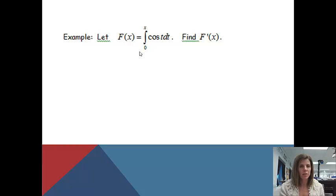Let's start with an example to show you where the second fundamental theorem of calculus comes from. You'll notice that it says capital F of x equals the integral from 0 to x of cosine t dt, and it asks us to find F prime of x. So it wants me to find the derivative of this answer.